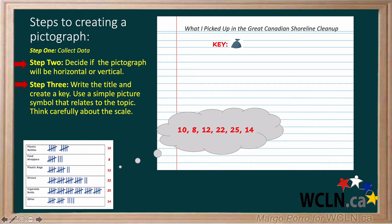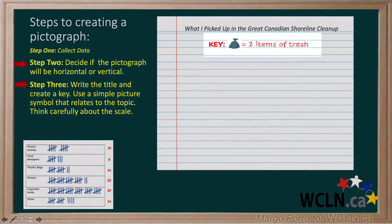she'd probably want each trash bag to represent 4, 10, or even 20 items. But with her small numbers, if each trash bag represented 10 items, it would be really hard to show numbers like 8 and 12. Holly decided she should choose a scale of 2. If she uses 2, she needs to draw 12 and a half trash bags for her largest number, 25, but it will make her data really clear. She writes her scale in her key.